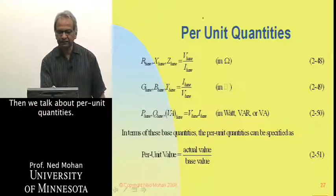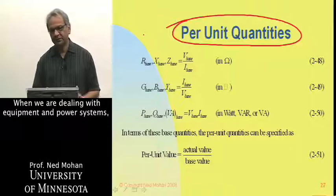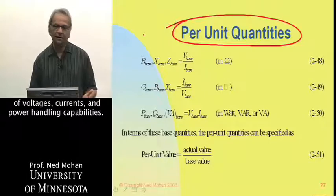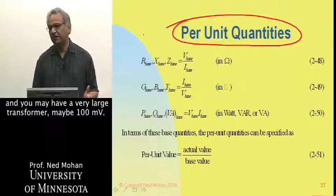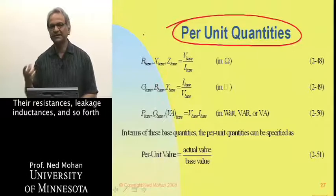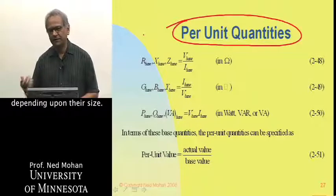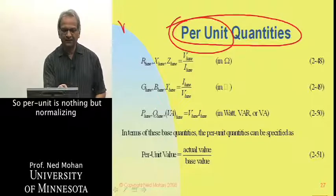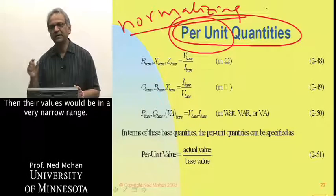Then we talk about per-unit quantities. When dealing with equipment in power systems, equipment could vary in a wide range in terms of voltages, currents, and power handling capabilities — you may have a small transformer of a few kVA or a very large transformer of 100 MVA. Their resistances, leakage inductances, and so forth in ohms would be in a very wide range depending upon their size. But if you normalize them — that is, put them in per unit — their values would be in a very narrow range.